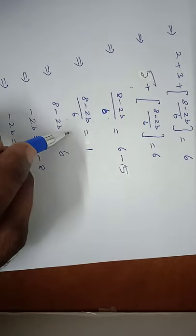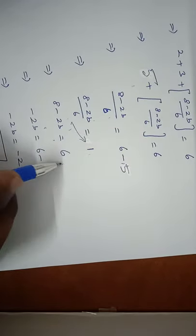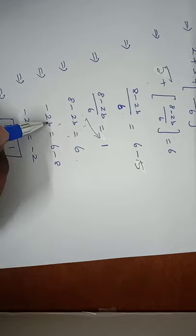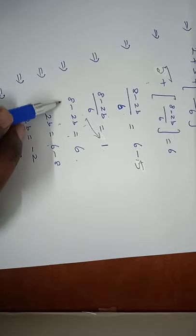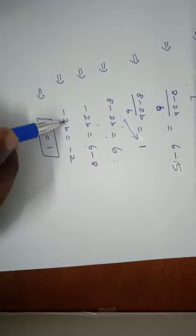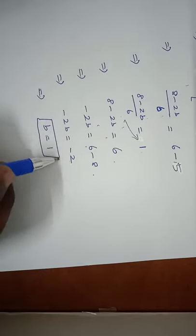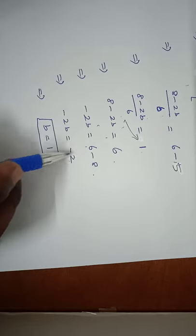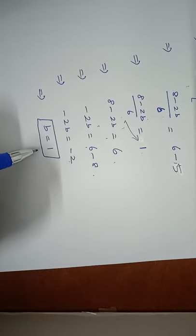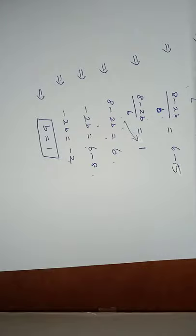Solving: 8 - 2B = 6, so -2B = 6 - 8 = -2, giving B = 1. Hence the second problem is solved.